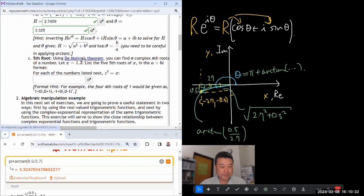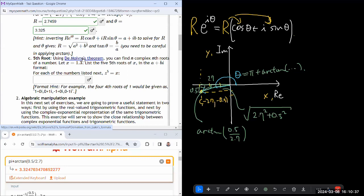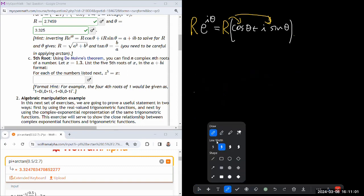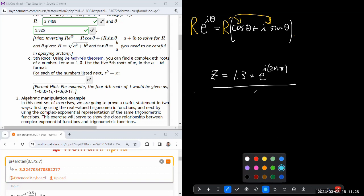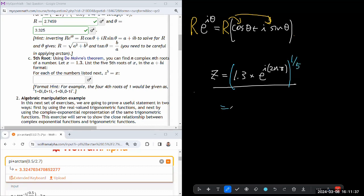Fifth root using De Moivre's theorem. So you have this number here, x equals 1.3. Let me write it in full form: z equals not just 1.3, but it's 1.3 times e to the power of i times 2 pi. That is the full description, because this is e to the i times 0, that's just 1, so it doesn't actually change anything.